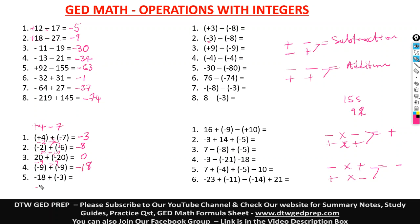Here we have negative 18, and this times this gives us negative 3. Negative 18 and negative 3 — that is addition. We add and get 21, and our sign is negative.